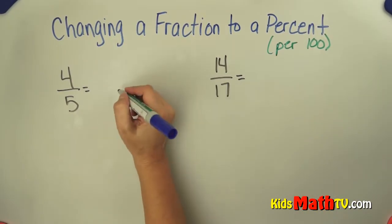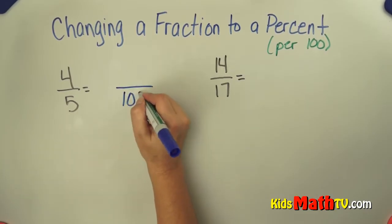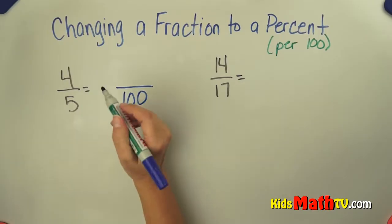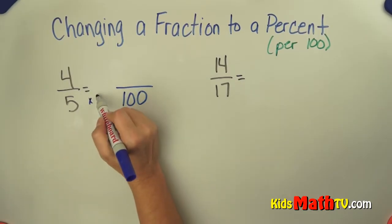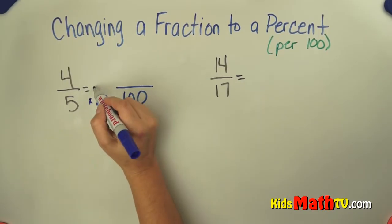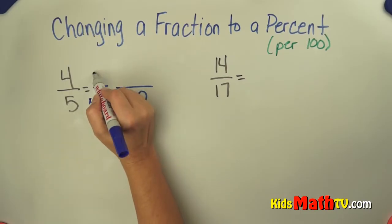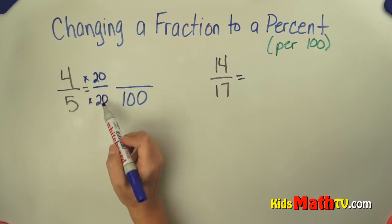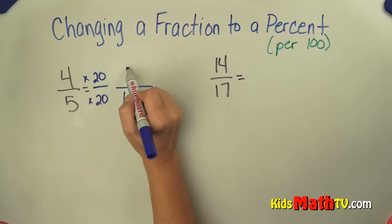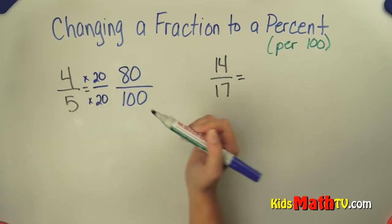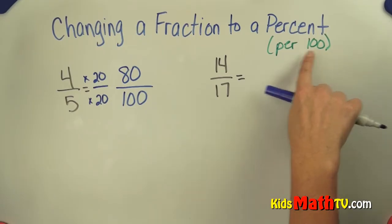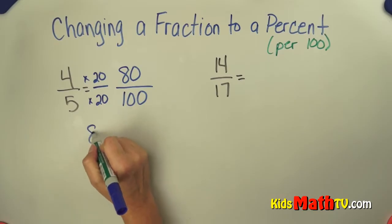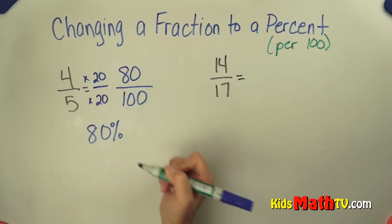So if my fraction can easily be made into hundredths, I'm going to do it that way. I know I can get from 5 to 100 relatively easily by multiplying by 20. Whatever I do to the denominator, I have to do to the numerator. So I'm going to multiply the numerator and the denominator by 20, and I get 80 out of 100. Percent means per 100, this is 80 per 100, so this fraction is simply 80 percent.